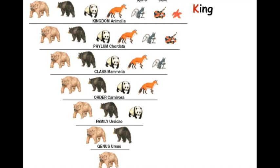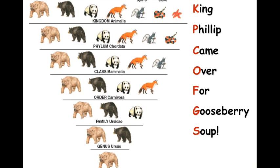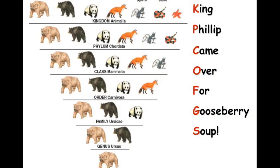We can come up with an acronym to help us remember: kingdom, phylum, class, order, family, genus, species. We've got 'King Philip came over for gooseberry soup.' You can make up your own acronym, but we need to remember kingdom, phylum, class, order, family, genus, species — largest to smallest.